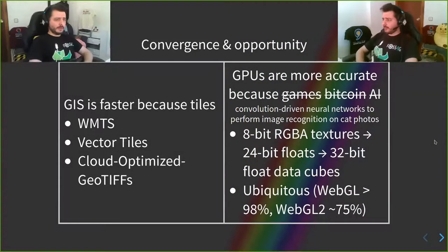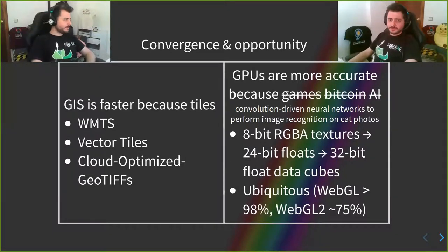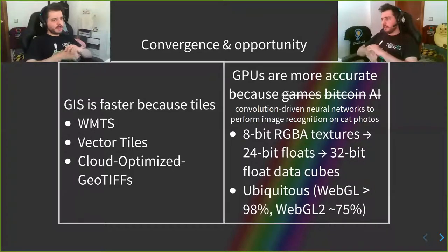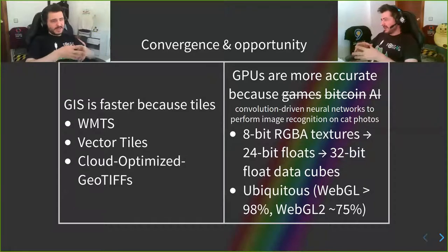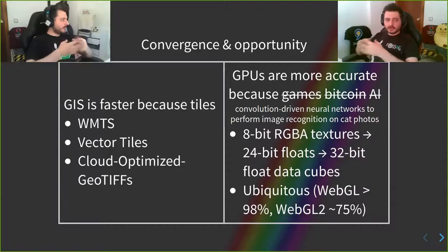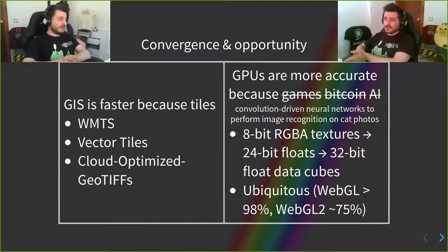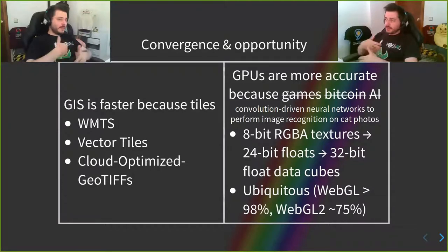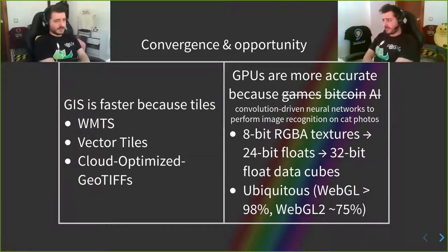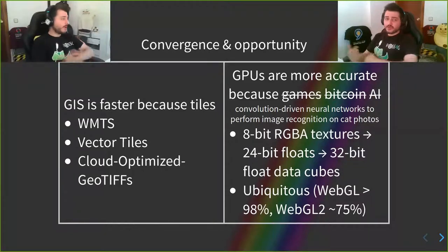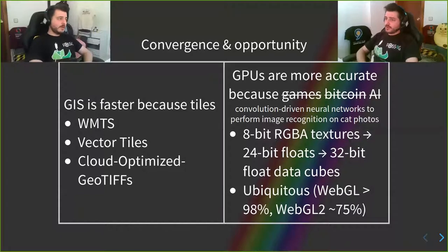However, I think GIS and games are converging a bit. GIS has gotten faster because of tiles. Since around 2005, tiles have been speeding things up immensely because you only worry about the data you need. Before that, in the early 2000s, GIS was all about having all the data at all times in full resolution. But once you realise you only need to show partial data to cover your viewport and can cache things on web servers, tiles were the way forward — with WMTS, then vector tiles, and now cloud-optimised GeoTIFFs, which are essentially tiles within one file queried by range.